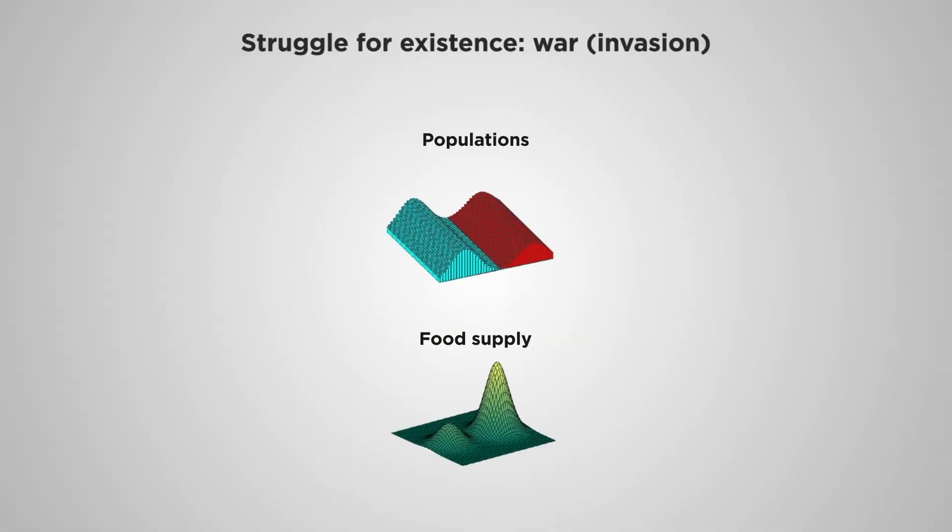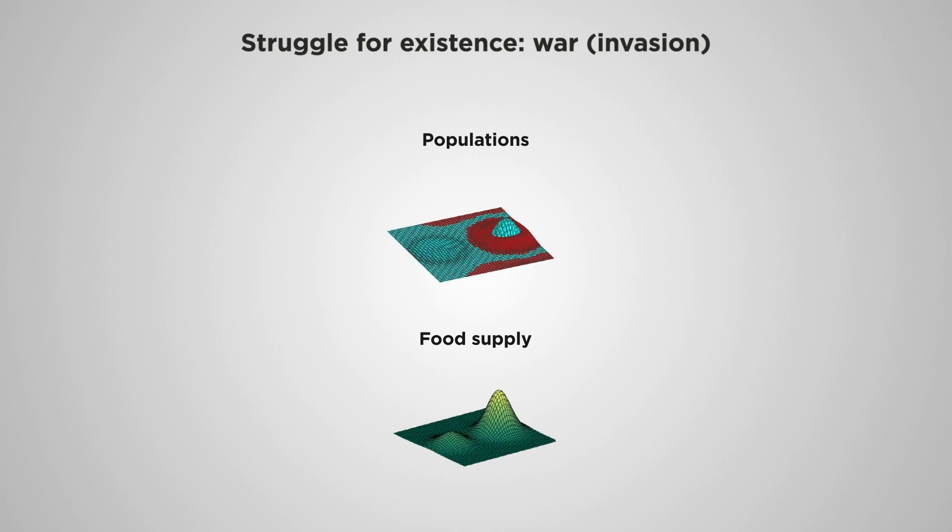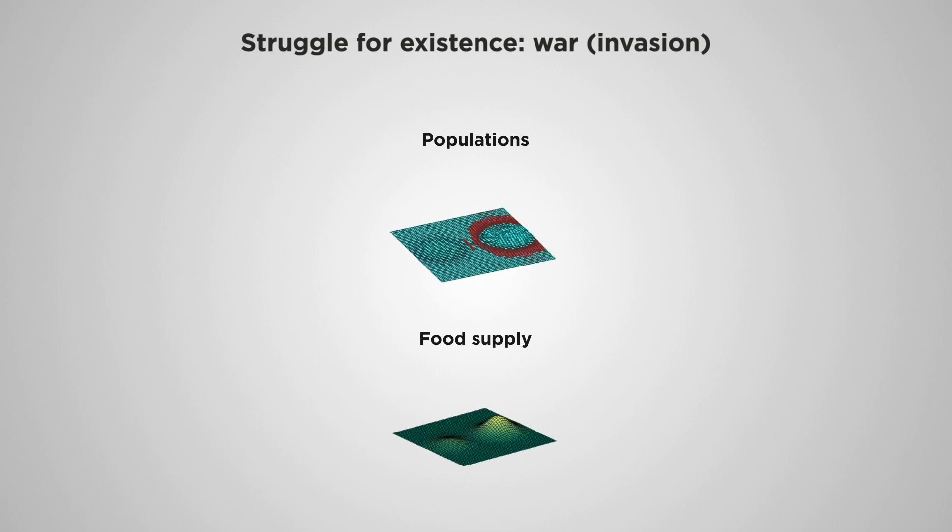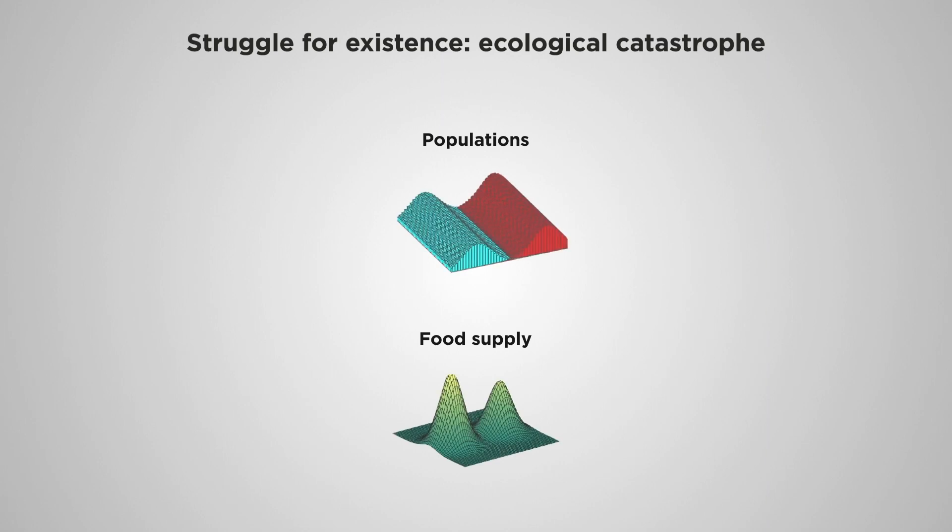If one species dominates and the species are strongly intolerant of one another, the dominant species invades an area of high food supply occupied by the weaker species. The weaker species is suppressed and abolished from the habitat. Ecological catastrophe results in the elimination of both species.